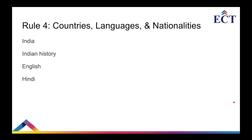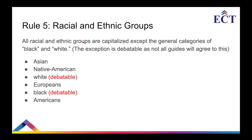Rule four: countries, languages, and nationalities — we always use capitalization. For example, India, Indian history, English, Hindi — all these words are capitalized. Rule five: racial and ethnic groups. All racial and ethnic groups are capitalized, except the general categories like 'black' and 'white,' where 'b' and 'w' are not in capital — though these exceptions are debatable and not all grammar guides agree. However, for well-established groups such as Asian, Native Americans, Europeans, Americans, etc., you should capitalize those words.